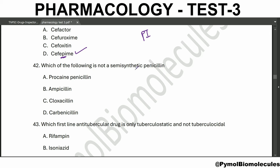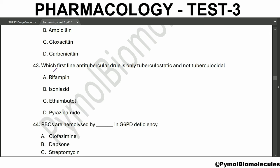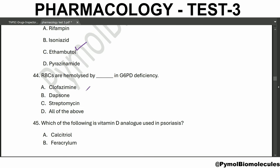Which of the following is not a semisynthetic penicillin? That is procaine penicillin. Which first-line antitubercular drug is only tuberculostatic and not tuberculocidal? That is ethambutol. RBCs are hemolyzed by dapsone in G6PD (glucose-6-phosphate dehydrogenase) deficiency.